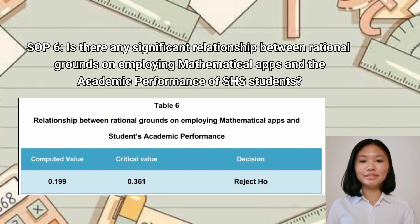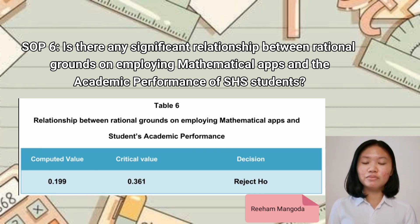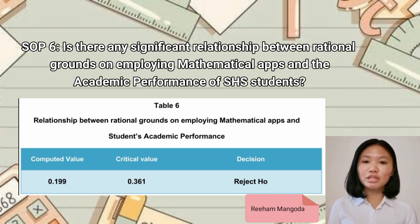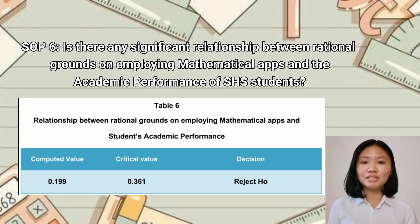Statement of Problem No. 6: Is there any significant relationship between rational grounds on employing mathematical apps and the academic performance of senior high school students? Table 6 shows the p-value acquired from the Pearson R-correlation, critical value from the distribution table, and interpretation. Since the p-value is not less than the significance level, the hypothesis is rejected.